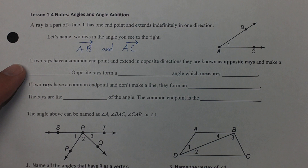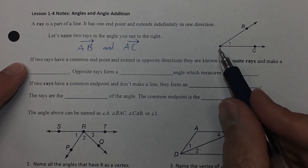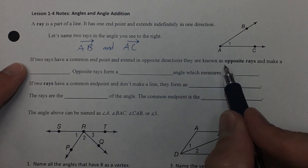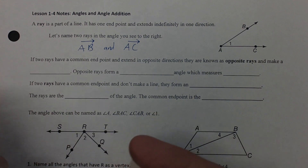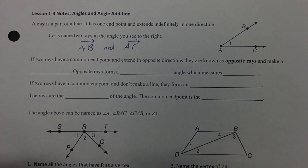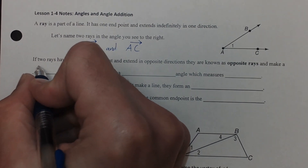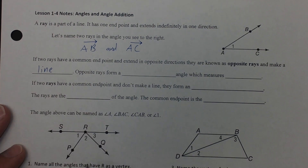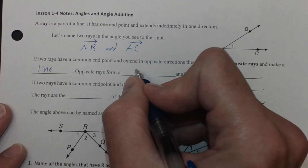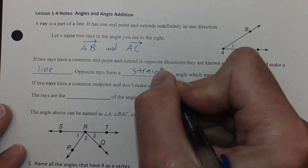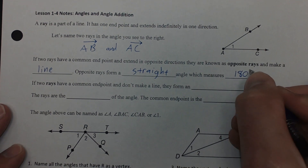If two rays have a common endpoint and extend in opposite directions, they are known as opposite rays. So if one was going to the left and one was going to the right, they would be forming a straight line. Two opposite rays form a straight angle, and a straight angle is defined as measuring 180 degrees.